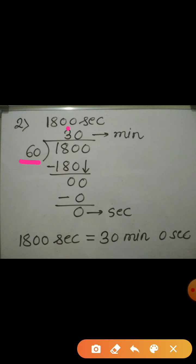Now, 60 in 3's are 180. 180 minus 180 is 0. Then, the last digit that is 0 will come down. Now, how many times 60 goes into 0? 0 times. 60 into 0, 0. And 0 minus 0, 0.